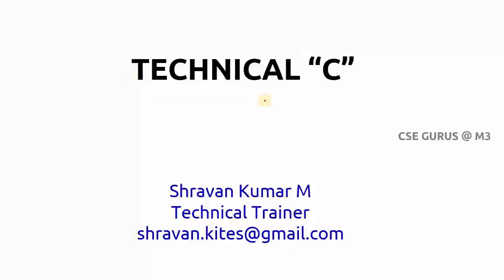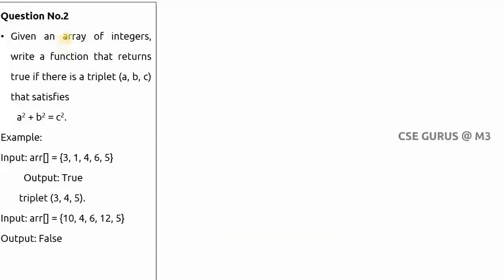Welcome to the video lectures on Technical C by Sravankumar Mantri. Coming to question number two: given an array of integers, we need to write a function that returns true if there is a triplet (a, b, c) that satisfies a² + b² = c².